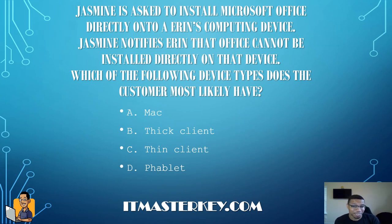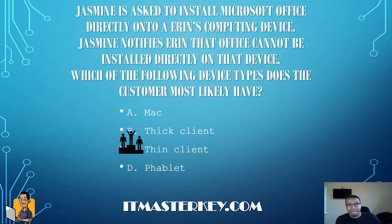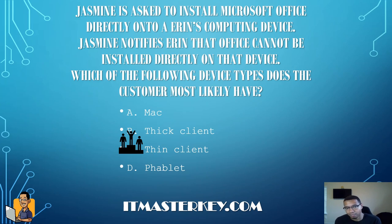Jasmine is asked to install Microsoft Office directly onto Aaron's computing device. Jasmine notifies Aaron that Office cannot be installed directly on that device. The customer most likely has a thin client. A thin client is used for a specific purpose and doesn't have a detailed or full-featured platform. Microsoft Office would be put on a thick client. Thin and thick don't refer to size or form factor — thin means minimum functionality, thick means lots of functionality, pretty much whatever you need the machine to do.